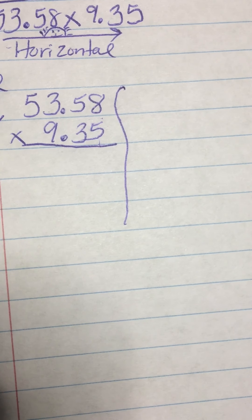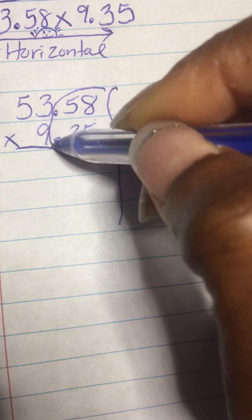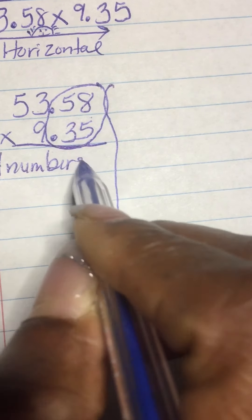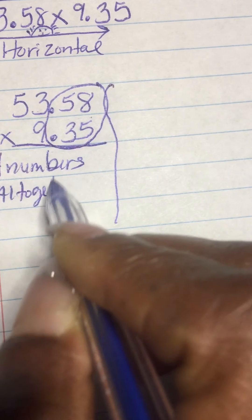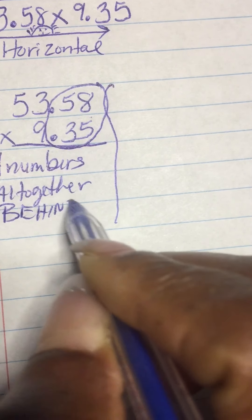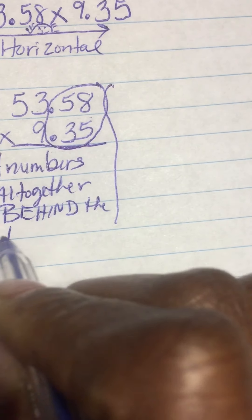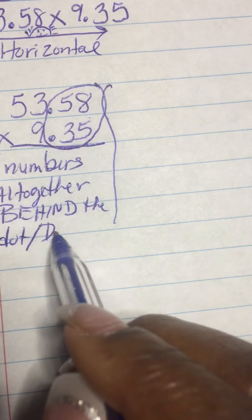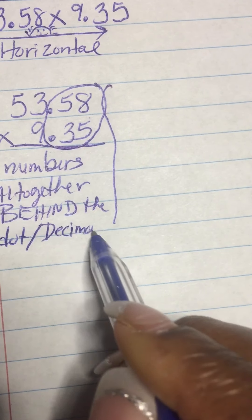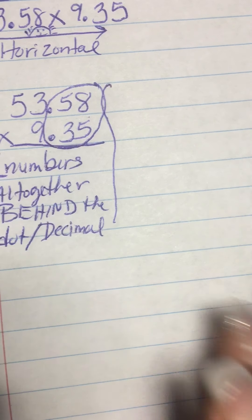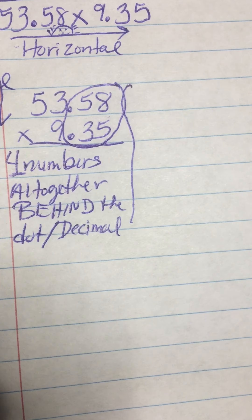But I'm going to leave off the decimal until the end. So, the very first thing that you do, circle all the numbers that are behind the dot. And I see there are one, two, three, four. So, there are four numbers all together behind the dot, which is the decimal. So, that means in our answer, we're also going to make sure there's four numbers behind the dot or the decimal in our answer.